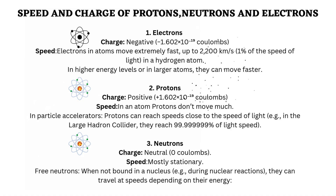Speed and charge of the main subatomic particles. Electrons carry a negative charge. Electrons in atoms move extremely fast, up to 2,200 kilometers per second — about 1% of the speed of light in a hydrogen atom. In higher energy levels or in larger atoms, they can move even faster.